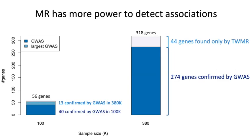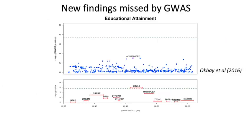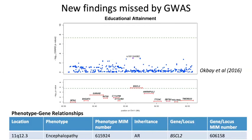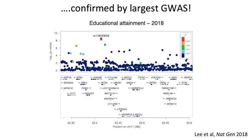Our results suggest that applying TWMR after GWAS, we can find in advance new loci that GWAS alone can find only with much larger sample sizes. Another example of a region missed by GWAS is this locus on educational attainment: the top SNP doesn't reach genome-wide significance, but our TWMR analysis showed a significant association for BSCL2, a gene already known to be associated with a Mendelian form of encephalopathy. When we look at a more recent GWAS with a much larger sample size, this region becomes significant for GWAS as well, confirming that TWMR can find in advance new loci that GWAS will find in the future.